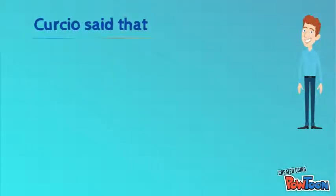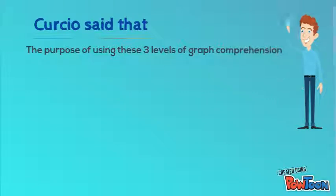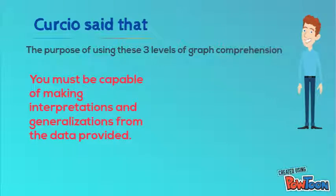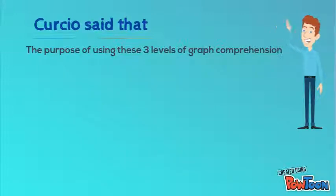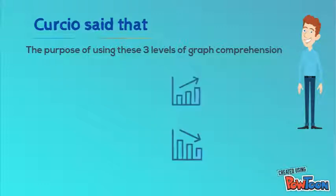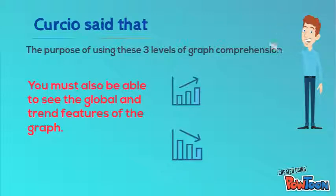Kurshio, being the founder of these three levels of graph comprehension, said that the purpose of introducing this concept is to make students realize that the maximum potential of the graph can only be seen when they are able to interpret and generalize data. He further added that a graph is a picture that speaks a thousand words. Therefore, students should not only see a few point-wise words but also see the global and trend features of the graph.